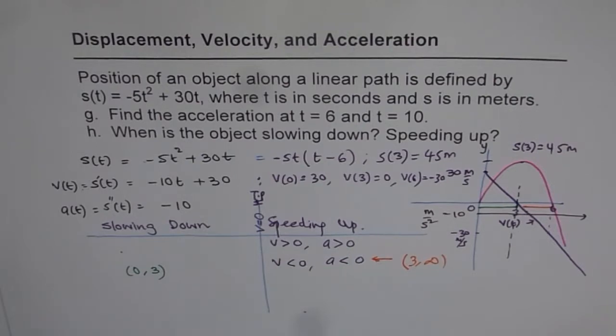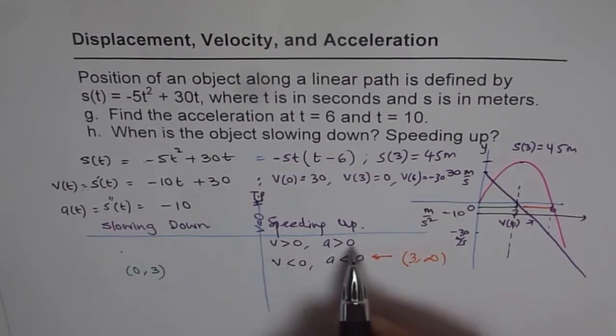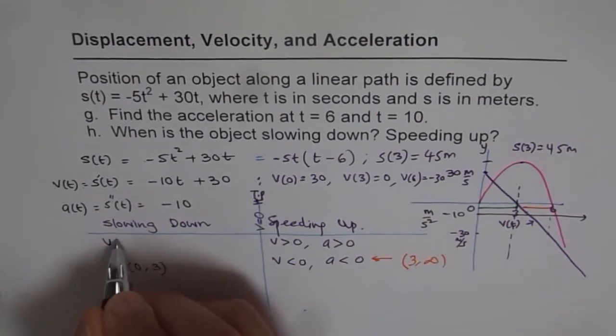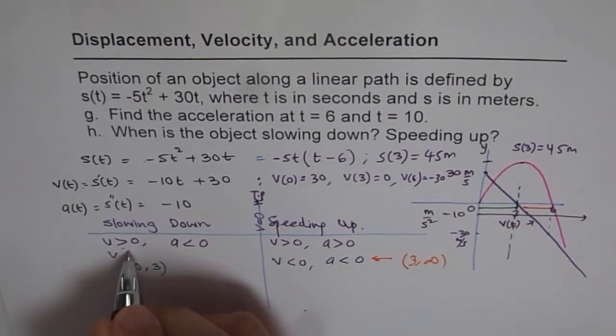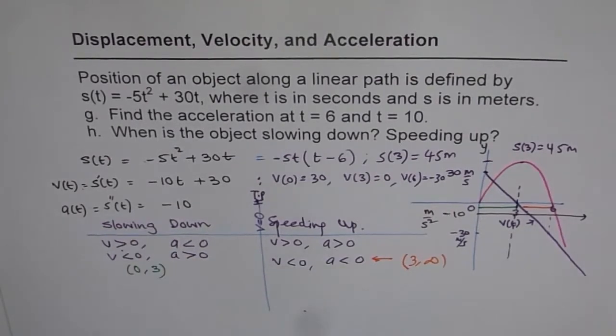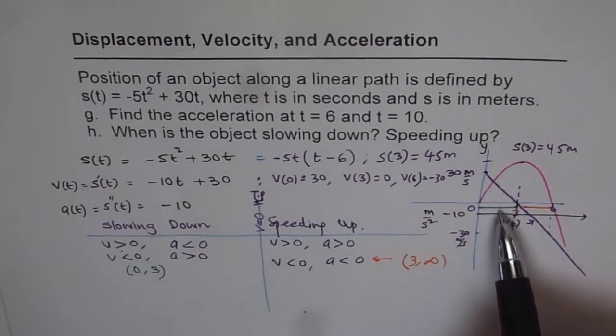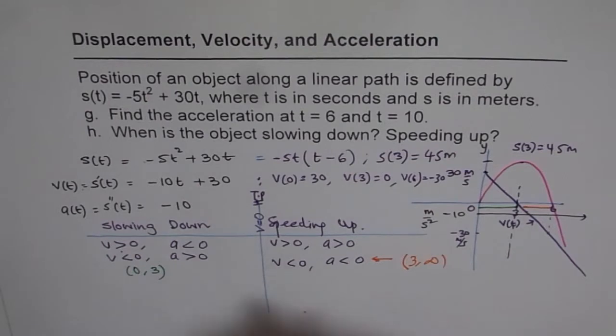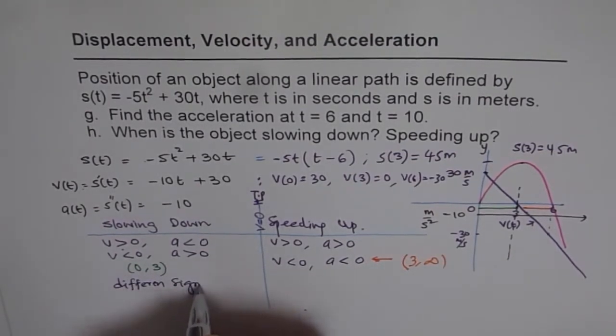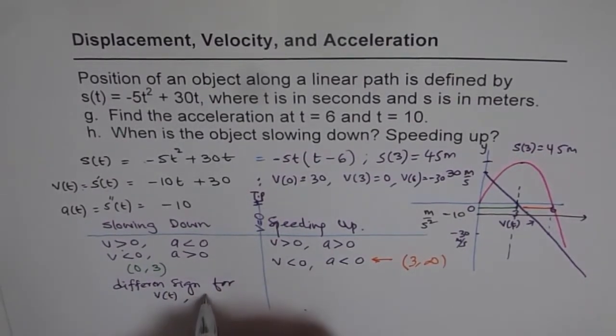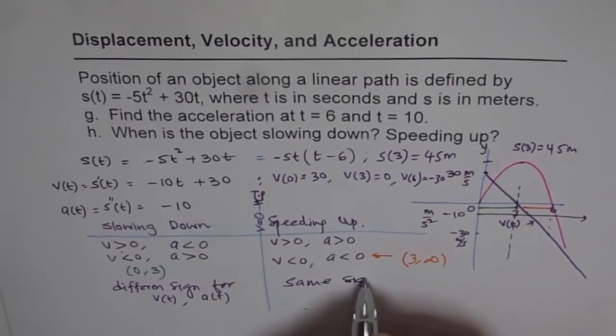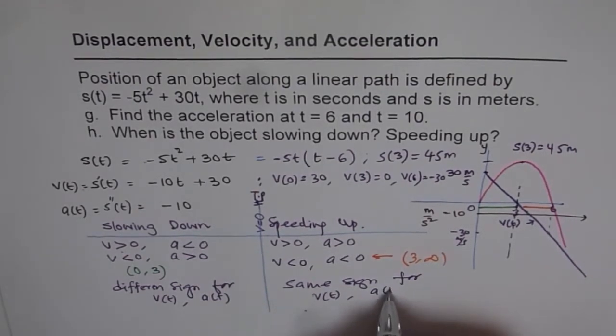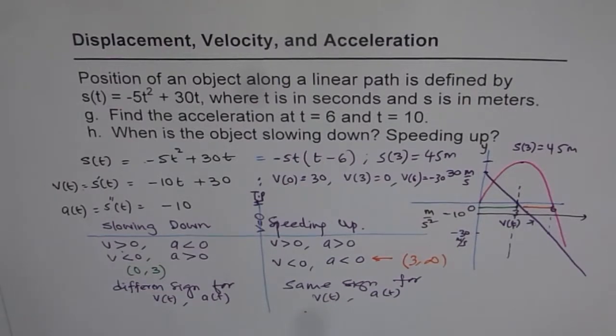In short, what we can say: if velocity and acceleration are both positive or both negative, we're speeding up. But if v > 0 and a < 0, or the other way, v < 0 and a > 0, then we're slowing down. Slowing down is two different signs. Different signs for velocity and acceleration. Same sign for speeding up. If both are in the same direction, both positive or both negative, it's speeding up. If both are in opposite direction, as from zero to three, they're slowing down.